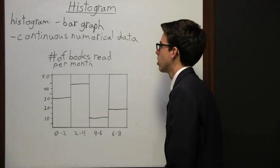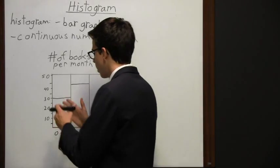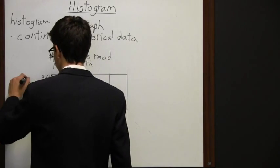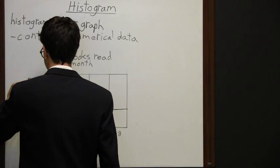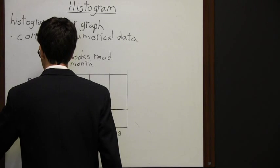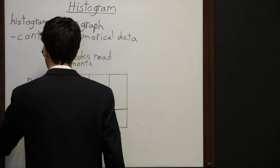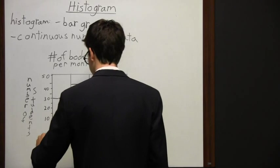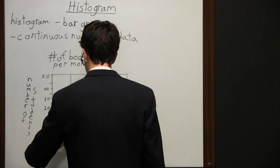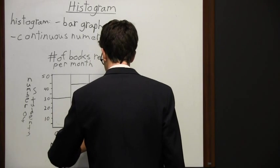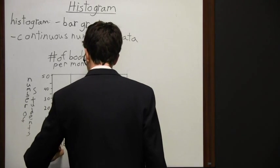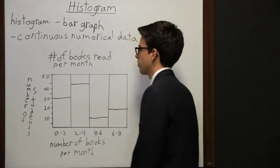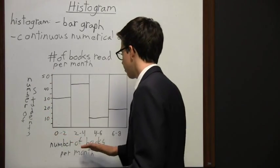We're looking at the number of books read per month by students. We have a y-axis and an x-axis like you would in any bar graph. Right here we have the number of students, and then going this way we have the number of books per month. So we have the number of students and the number of books per month.